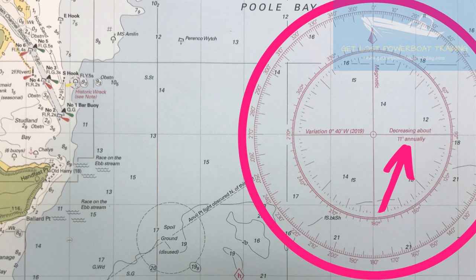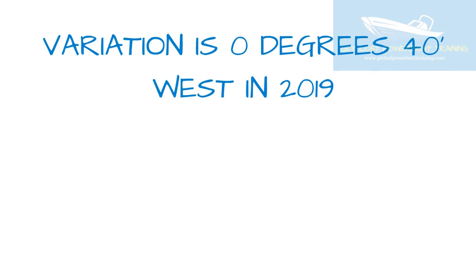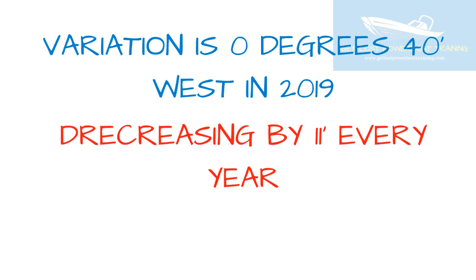Remember, there are 60 minutes in a whole degree. So, looking at that as an example: variation is 0 degrees and 40 minutes to the west in 2019. That's decreasing by 11 minutes every year. So in 2020, variation is 29 minutes — 40 minutes minus 11 minutes.